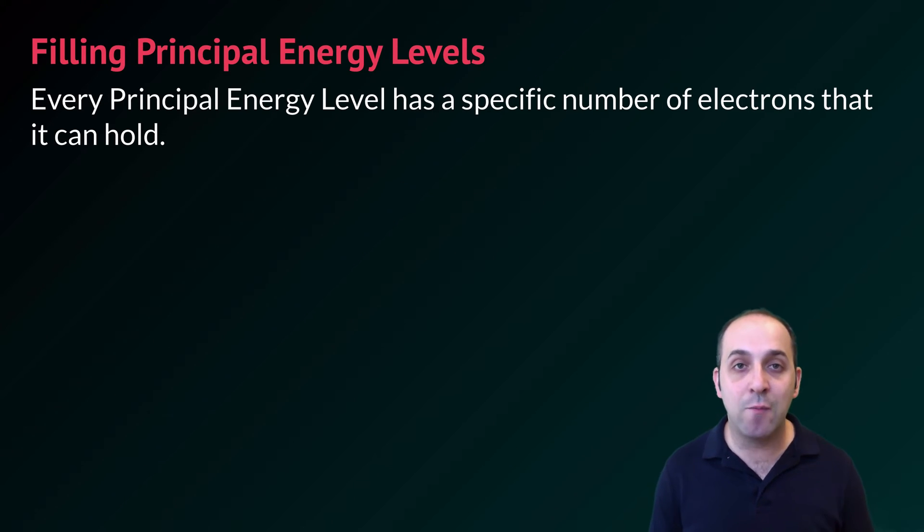When we put electrons around an atom they can only go into specific places. Those places are going to be called principal energy levels and every principal energy level has a specific number of electrons that it can hold.